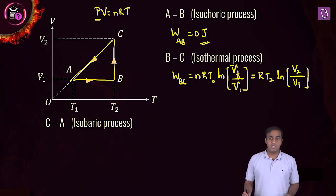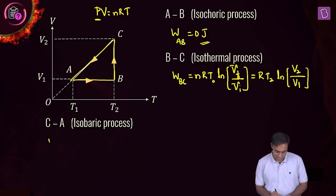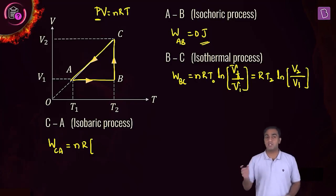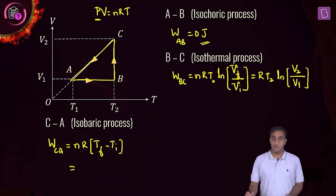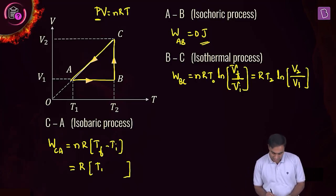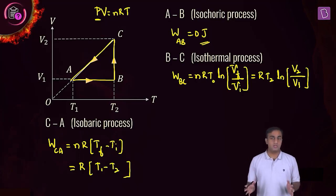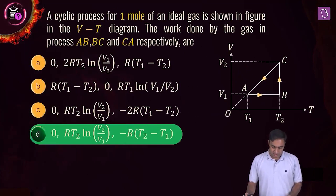Now for the last one, process CA, which is an isobaric process, the expression for work done will be nR into the temperature difference, final minus initial temperature. With n = 1 mole, the final temperature is T₁ and the initial temperature is T₂, so this becomes R(T₁ − T₂). Checking against the options, the correct option for this question is D.